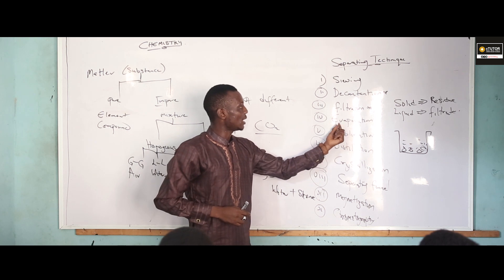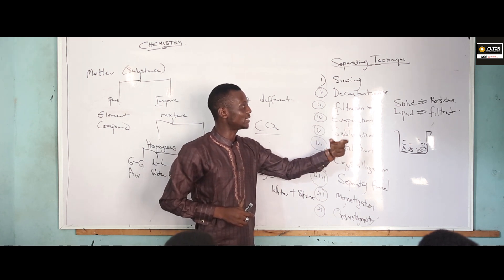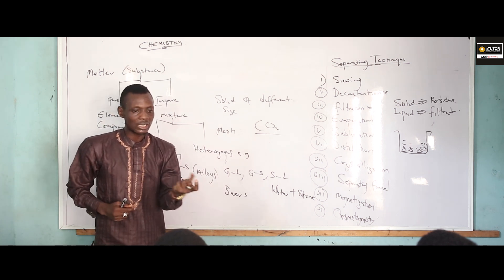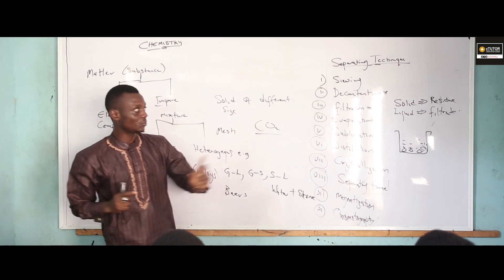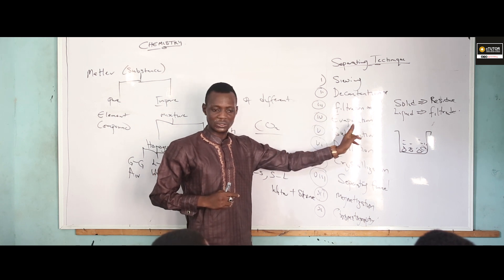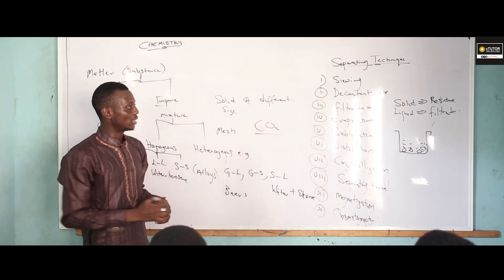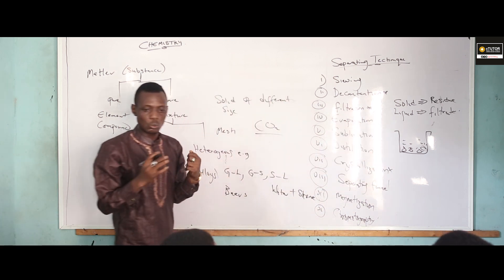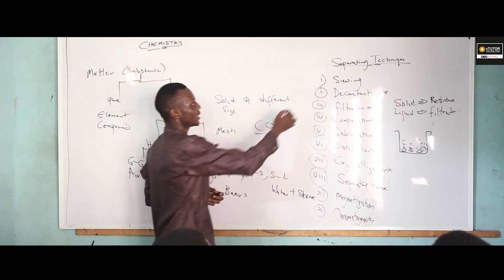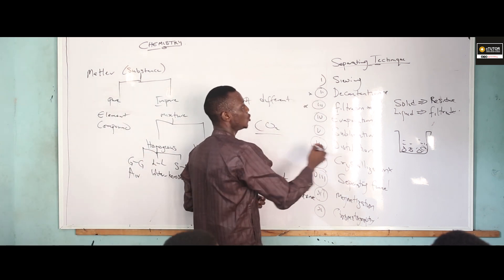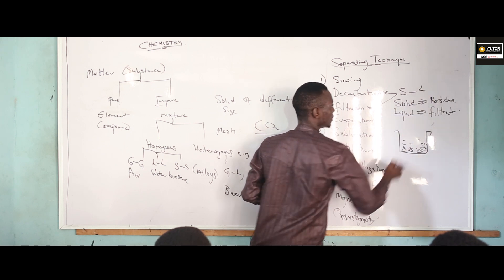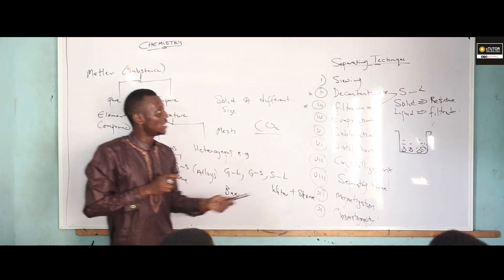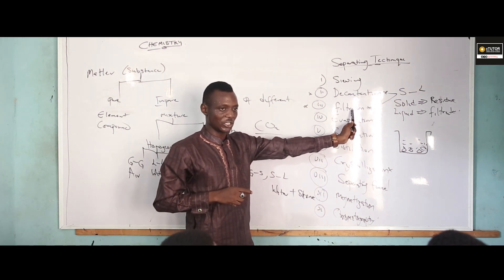For example, for filtration — when you have chalk and water mixed together, you can simply use filtration. Now the next one is evaporation. Evaporation and crystallization go along in the same way, unlike decantation and filtration which separate solid from liquid. In decantation the solid does not form a suspension, while in filtration the solid forms a suspension.